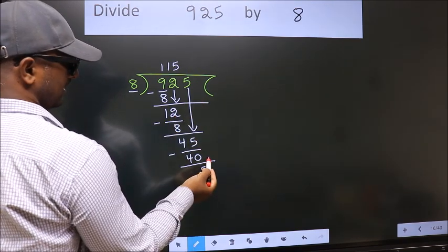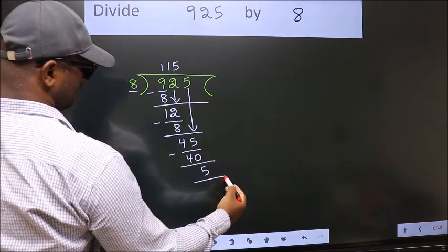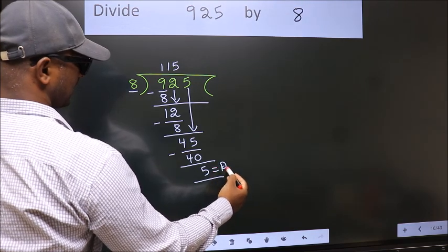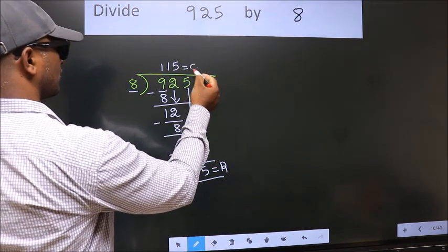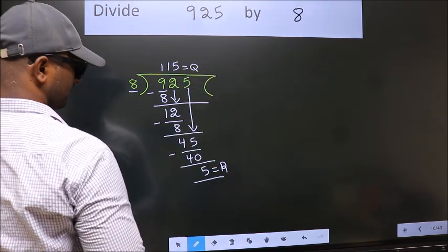No more numbers to bring it down. So we stop here. This is our remainder. This is our quotient. Here we go. Thank you.